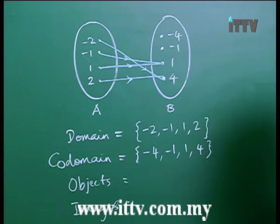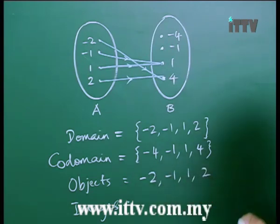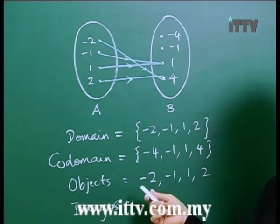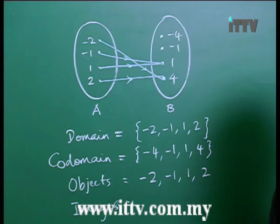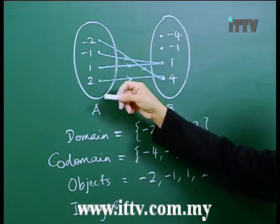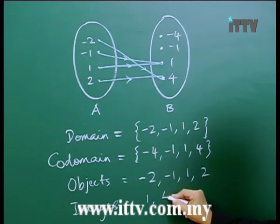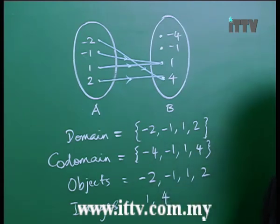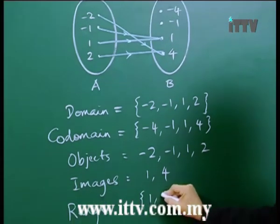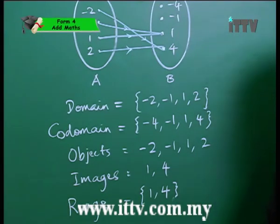The objects are the elements of the domain, but when writing objects, you do not need to write them in curly braces because objects are not a set — they are individual elements. The same applies to images. In this diagram, the images are only 1 and 4, because all 4 elements from set A were mapped only to these 2 elements in set B. Similarly, images are written without curly braces. The range also contains only 2 elements, {1, 4}, written in set notation.